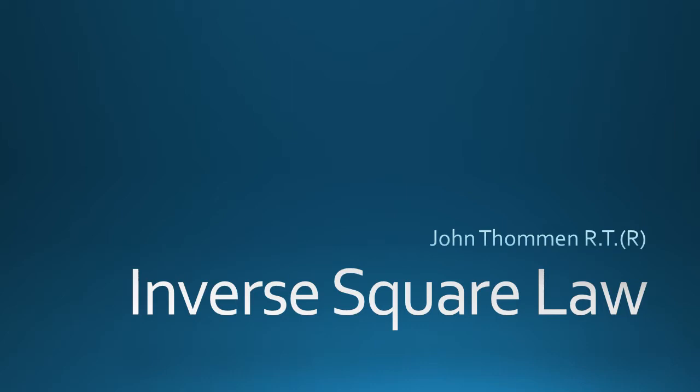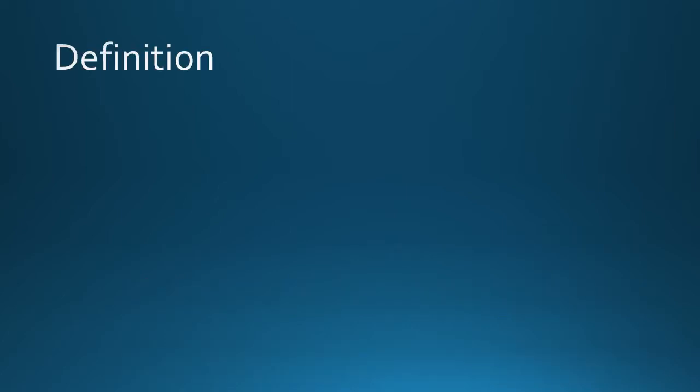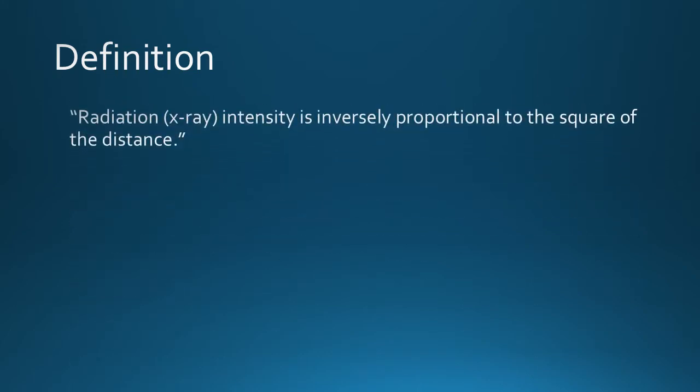When reducing dose, distance is the second most effective way to protect yourself from exposure. Why is that? The inverse square law has a very simple premise: the intensity of the radiation changes inversely with the square of the distance between you and the source of radiation.